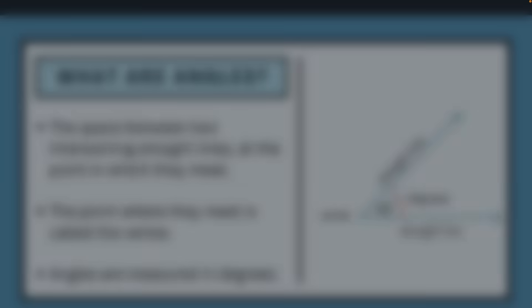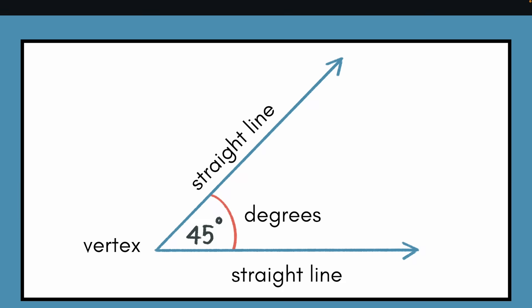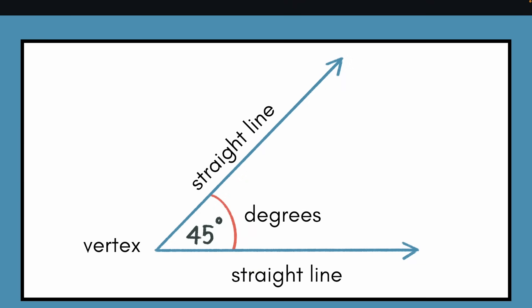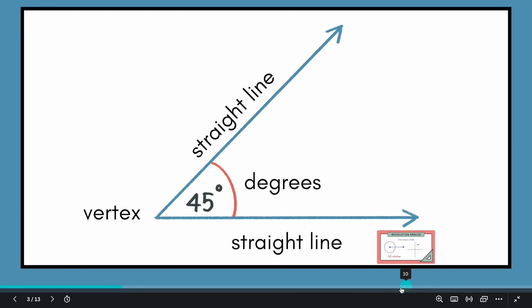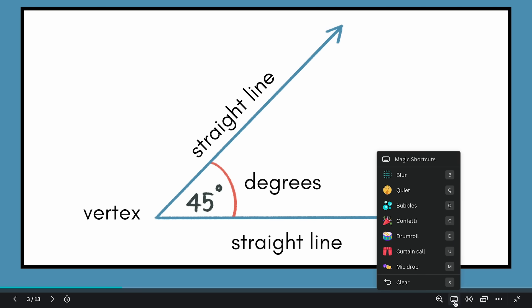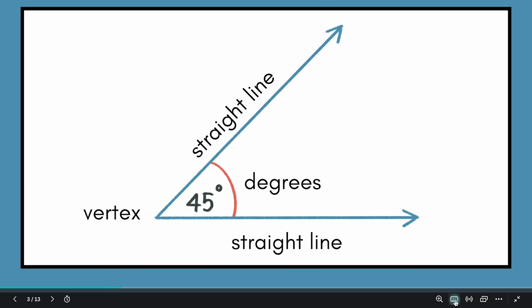If you've blurred a slide and then advance to the next slide, it will automatically unblur. You can also click U to get a curtain that covers the slide, and click U again to unveil it. I'll have all of these shortcuts listed in the description box. Within Canva's present mode, you can also bring your mouse to the bottom bar and click the keyboard icon to see the magic shortcuts reference at any time.